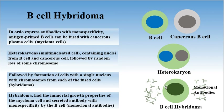The hybridoma has the immortal growth properties of the myeloma cell and secretes antibodies with monospecificity derived from the B-cell. These antibodies are monoclonal antibodies.